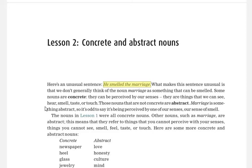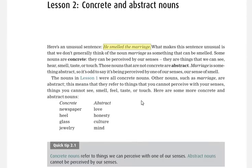Those nouns that are not concrete are abstract, like marriage. The list is given here: newspaper, heel, glass, jewelry—all these are concrete nouns. But can we see honesty? No, it means it's an abstract noun.